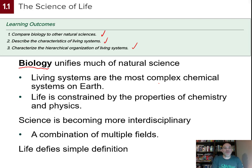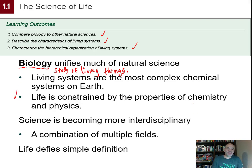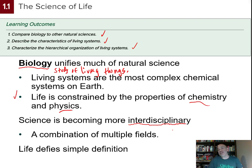Biology itself is defined as the study of living things, or organisms. Living systems are quite complex bodies of chemical reactions that occur within cells and multicellular organisms like trees or humans. The properties of life cannot violate chemistry or physics laws. The science is becoming very interdisciplinary, with many fields growing more and more integrated.